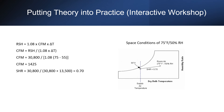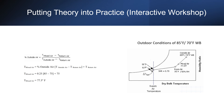Since we know the sensible heat load and delta T, we can calculate the CFM from the following formula, where delta T is the difference between the return air and supply air temperatures. On the psychrometric chart, plot space conditions of 75°F at 50% relative humidity and find the intersection of the sensible heat ratio line with the space temperature and supply air temperature. Then plot outdoor conditions of 85°F dry bulb and 70°F wet bulb.